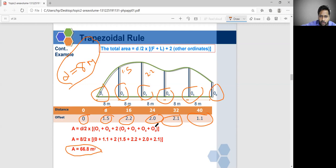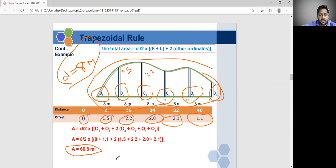So, for this irregular boundary or irregular area, your total area is 66.8 meter square. By using this trapezoidal rule, we can solve this formula. Thank you. We will discuss next method in the next class. Thank you.